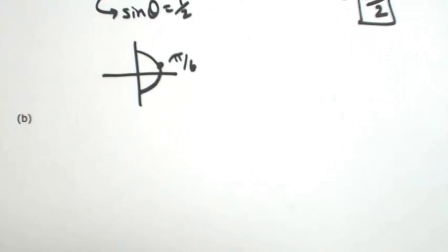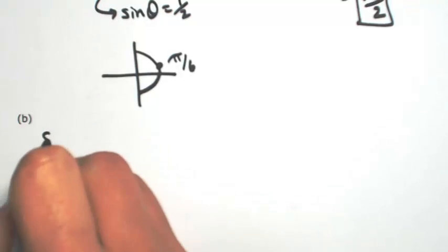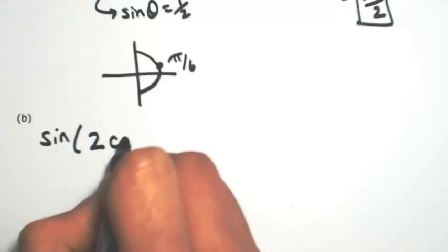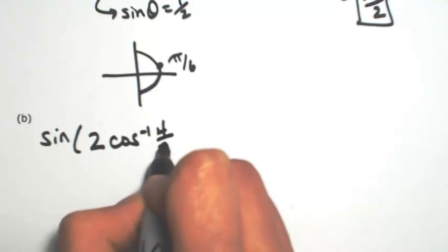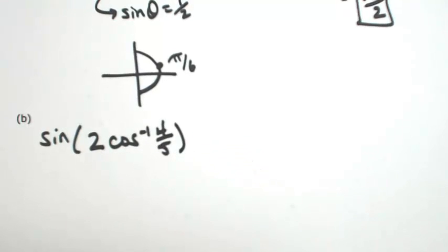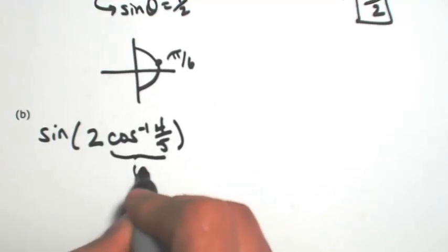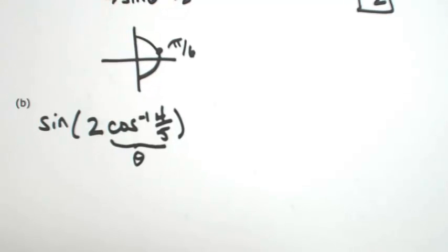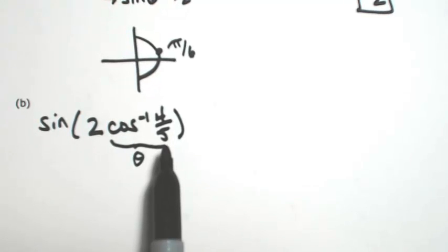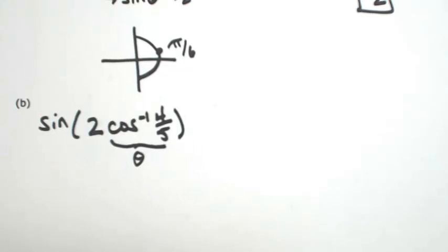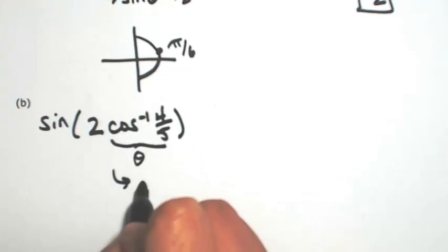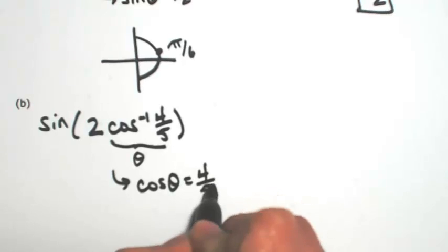Let's try another one with a value that's not one of our common ones on the unit circle. So let's say we have the sine of twice the inverse cosine of 4 fifths. Again, inverses are just angles, so that inverse cosine is some angle we call theta. Because 4 fifths is between negative 1 and 1, this angle does exist, and by the definition, cosine of theta will be 4 fifths.